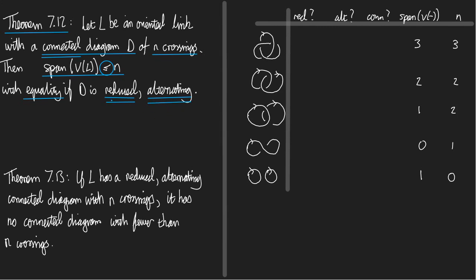So let's go and see how the theorem compares to what we observed before. So over here on the right, I've started off a table of the links we had before. And there's some columns there. There's a column for a tick or a cross if the diagram is reduced. There's a column for a tick or a cross if it's alternating or not, if it's connected or not. And here I've already put in for you the spans of the Jones polynomials and the numbers of crossings. So I suggest you pause, fill in the ticks and crosses in these three columns if you can, and decide how that compares with the theorem.